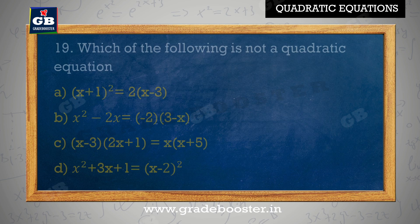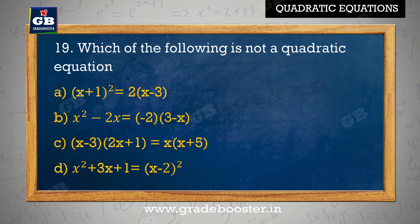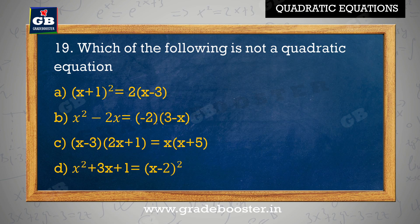Which of the following is not a quadratic equation? A. x plus 1 whole square equal to 2 into x minus 3, B. x square minus 2x equal to minus 2 into 3 minus x, C. x minus 3 into 2x plus 1 equal to x into x plus 5, D. x square plus 3x plus 1 equal to x minus 2 whole square.